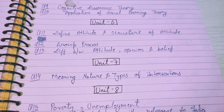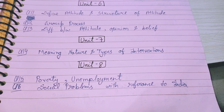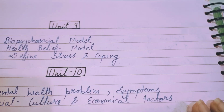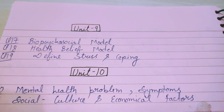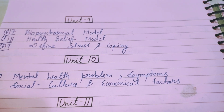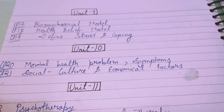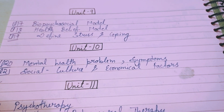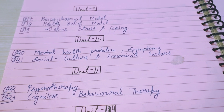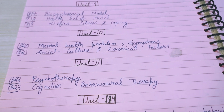Unit 6: Question 11 - define attitude and structure of attitude. Question 12 - differentiate between attitude, opinion, and belief. Unit 7: Question 14 - meaning, nature and types of interventions. Unit 8: Question 15 - poverty and unemployment. Question 16 - social problems with reference to India. Unit 9: Question 17 - bio-psychosocial model. Question 18 - health belief model. Question 19 - define stress and coping.